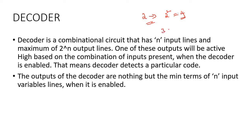A decoder is a combinational circuit that has n input lines and a maximum of 2 raised to n output lines. One of these output lines will be active high based on the combination of inputs present when the decoder is enabled.